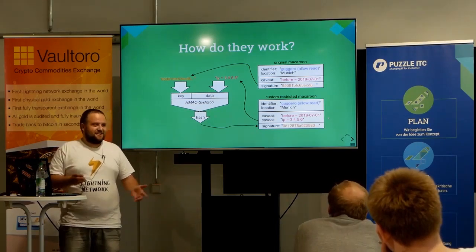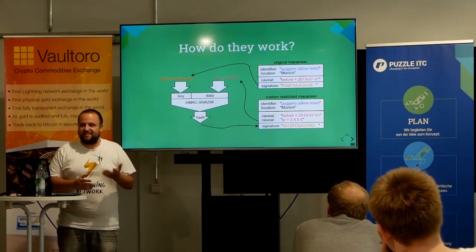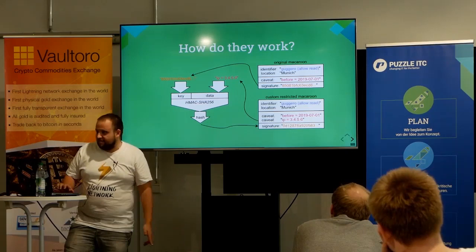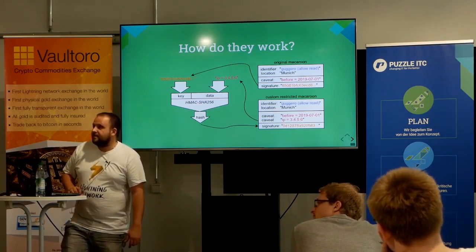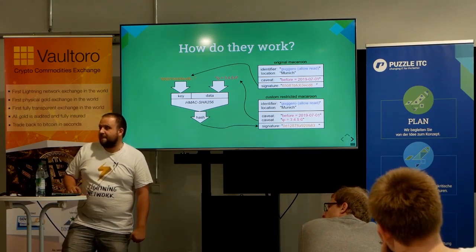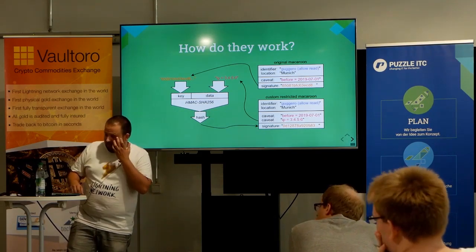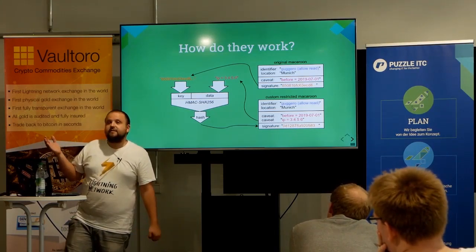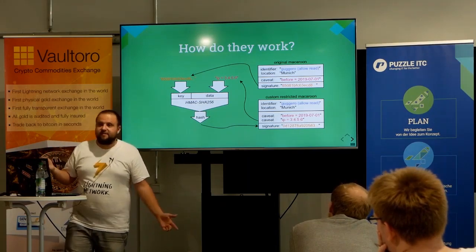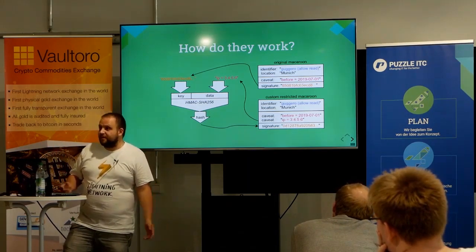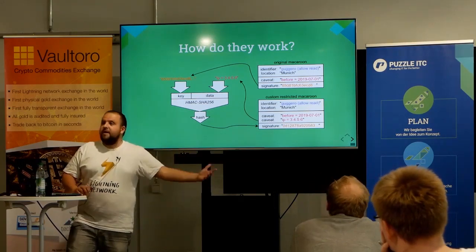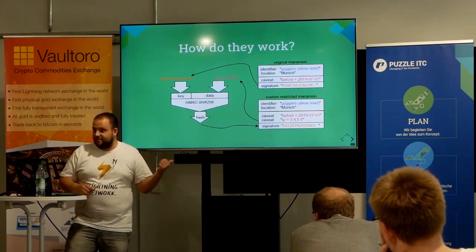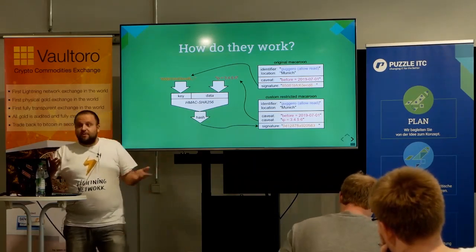Questions up to here — was it more or less understandable, or was it too fast? What's the range of caveats — the complexity? The question is: what can we put as caveats, what's the range, what's the feature? Well, that depends on the service. The service that you send the macaroon to has to understand this caveat. If the service doesn't understand it, it either just rejects it or ignores it.